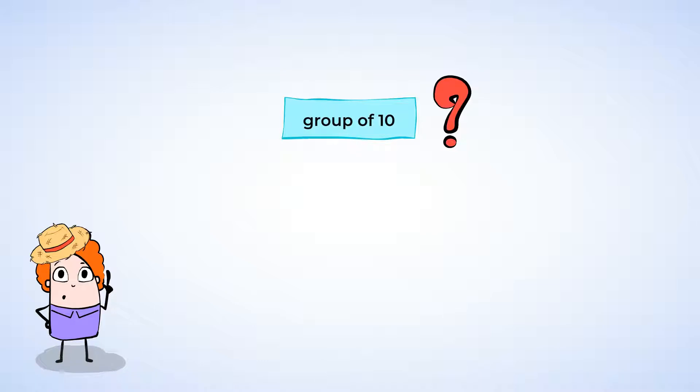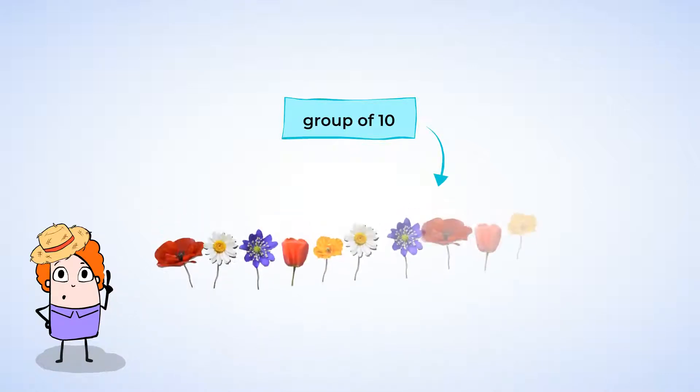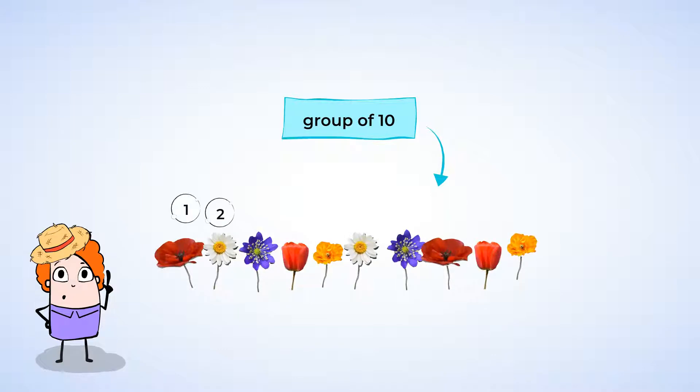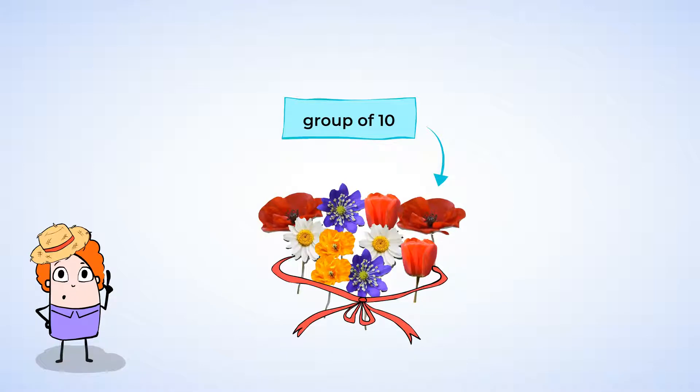A group of 10 means 10 objects that are grouped together. For example, here is a group of 10 flowers. 1, 2, 3, 4, 5, 6, 7, 8, 9, 10. What a beautiful bouquet! They smell fantastic and... Oh, sorry, I got distracted again. Back to grouping things in 10s.